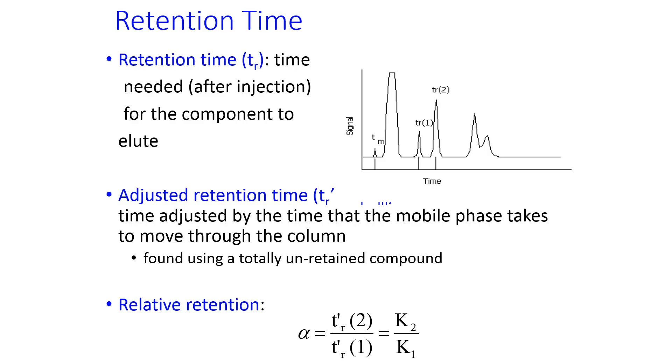Retention time is the time that it takes after the injection for the component to elute. And this is not always very straightforward because that column has some length. And so even if something was totally unretained, it would still take a little bit of time to come off of the column. The retention time, we want just the time that is longer than a totally unretained peak. And so subtracting the two gives you the adjusted retention time, tr prime.